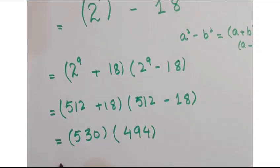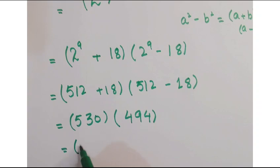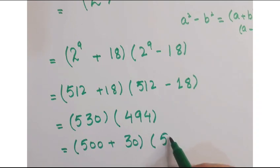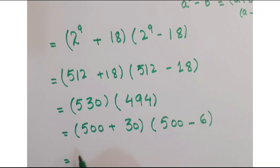Since calculators are not allowed, we can split 530 as 500 plus 30 and 494 can be written as 500 minus 6. Now our multiplication gets easier.